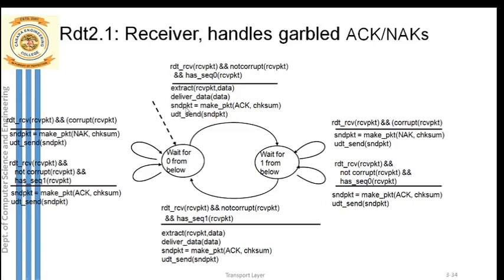The acknowledgement packet is sent via the network layer using udt_send. In RDT 2.1, the receiver checks three conditions: first, receive the packet with sequence number 0; second, check whether it is corrupted using checksum; third, if not corrupted and sequence number is 0, extract the data, deliver to application layer, create a positive acknowledgement, add checksum, and send it to the network layer.